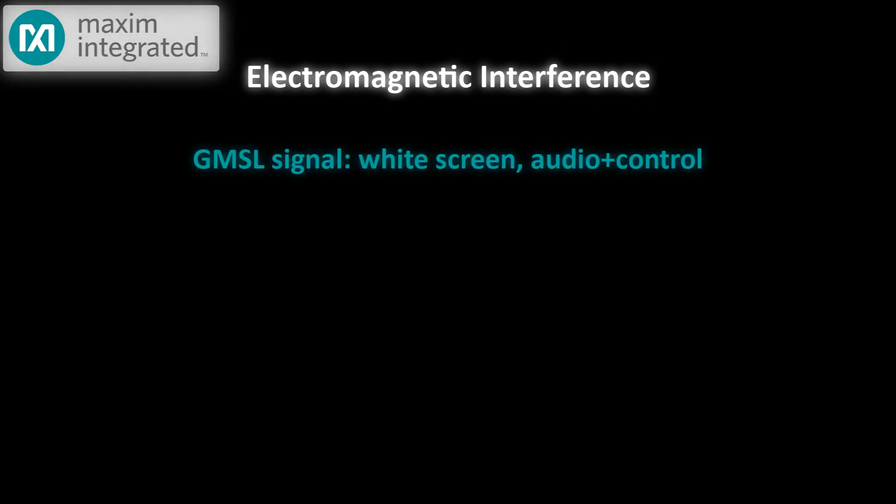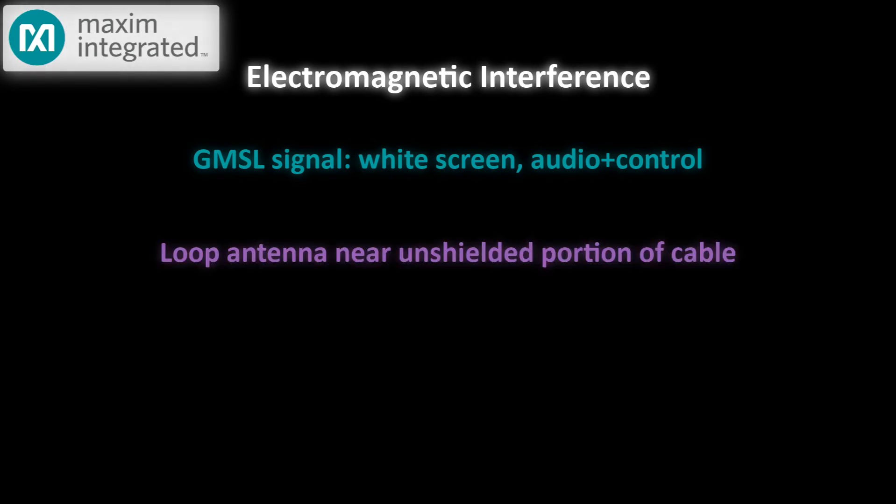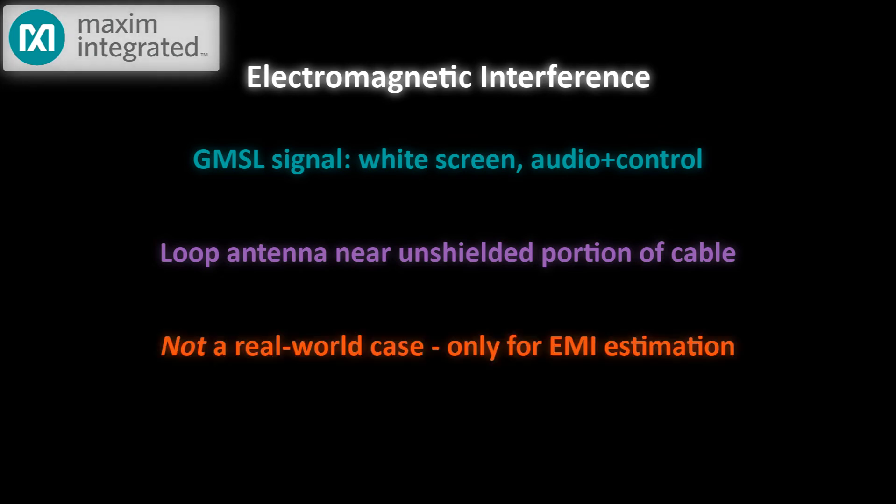First, we generated a GMSL signal that represented a white screen, that's an all-ones pattern, with an audio channel and control information. We set up a loop antenna near an unshielded segment of a twisted pair transmission line, so this is definitely not a real-world case. In this case, we're just trying to get an idea of how much EMI mitigation can be achieved with coding and scrambling.